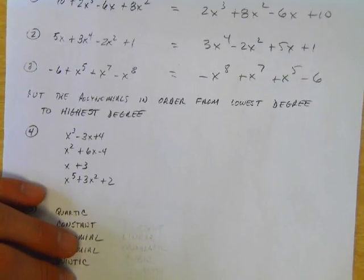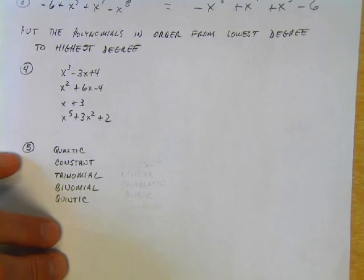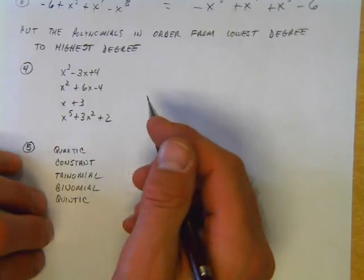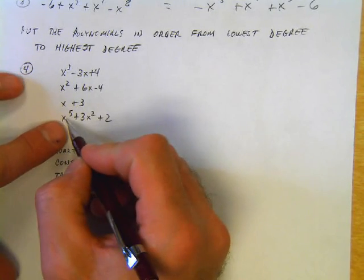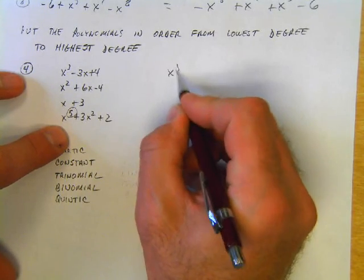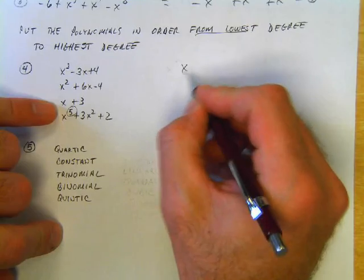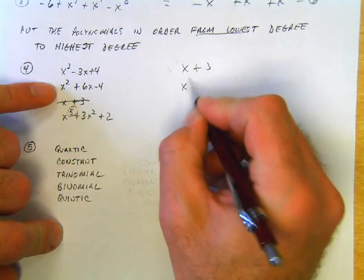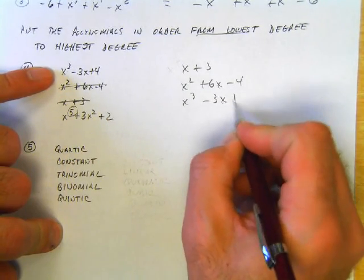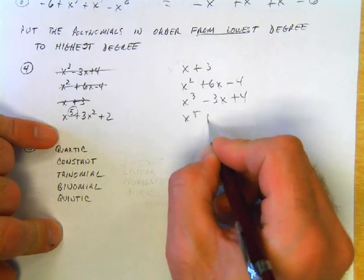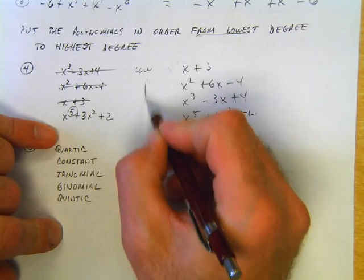Next, put the polynomials in order from lowest degree to highest degree. First, I'm going to make sure these are all in standard form, and it looks like they are. The highest degree has the largest exponent. So x to the 5th—oh no, we're going from lowest. So we do it the other way: x + 3, then x² + 6x - 4, then x³ - 3x + 4, then x⁵ + 3x² + 2. That's degree low to high.